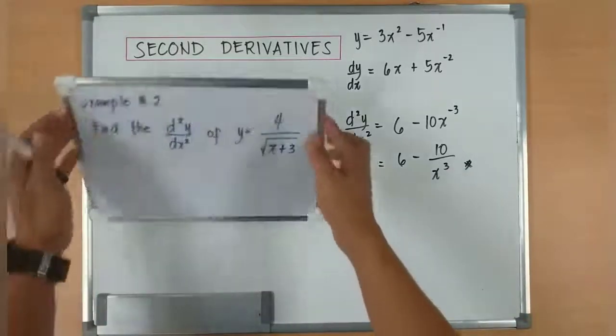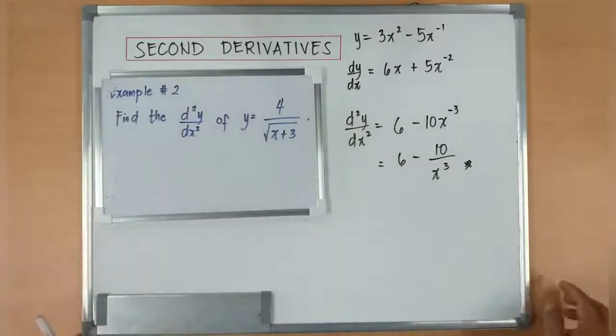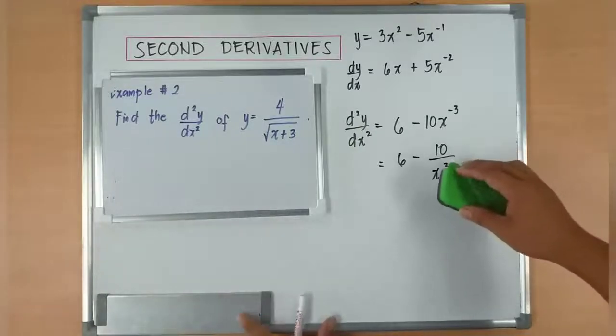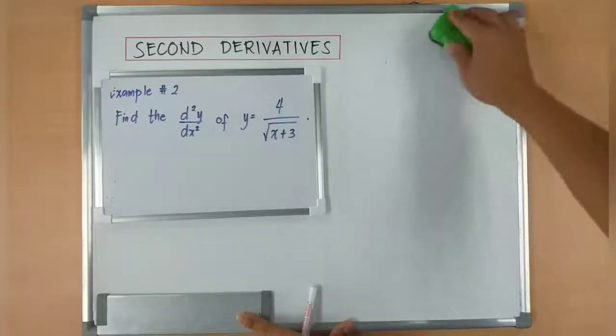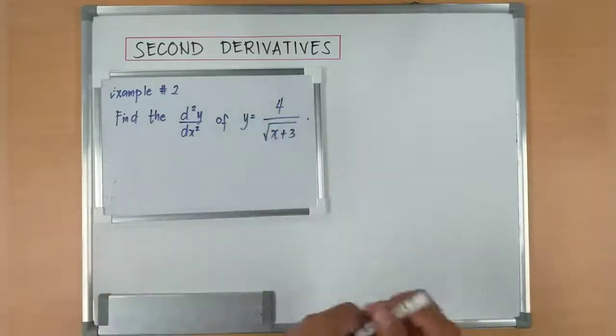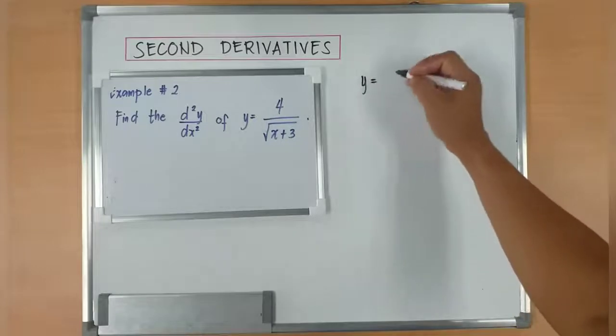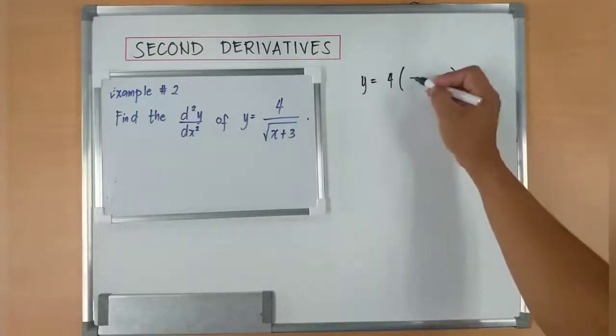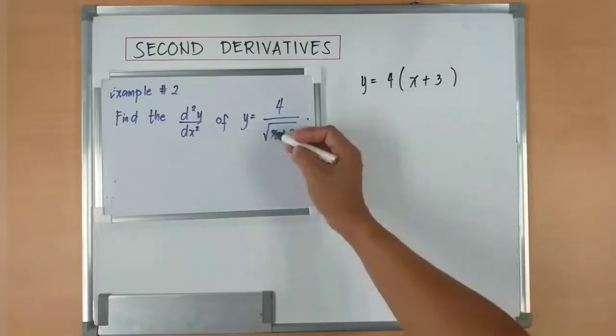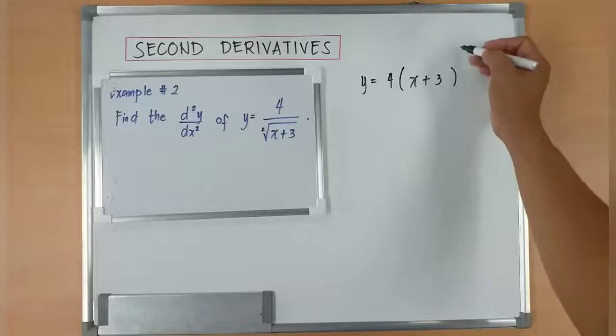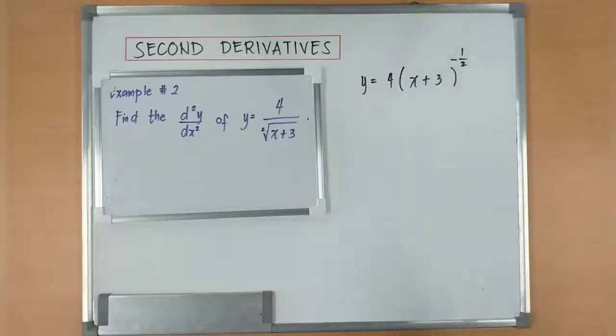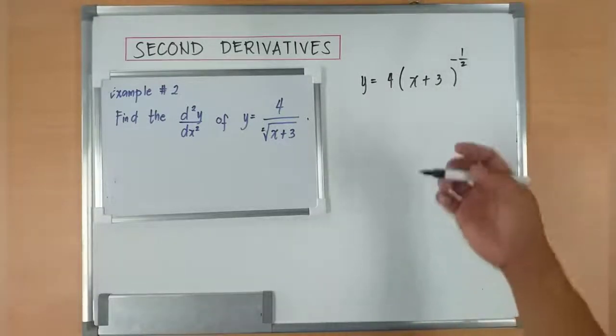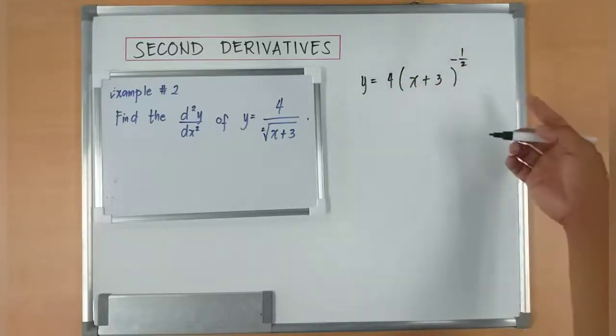Now, let's do another one. Example number 2. Let's say you have to find out d squared y over dx squared of y is equal to 4 over square root of x plus 3. So if you notice, y is equivalent to 4 bracket x plus 3. Remember, this is 1 over 2. But again, it is on the denominator. I'll bring it up. It will become negative. Now, since this is the function that I have.